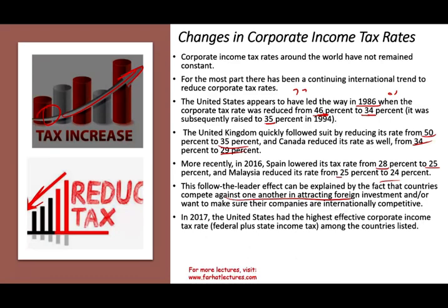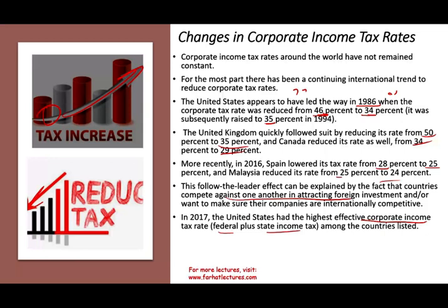In 2017, the US had the highest effective corporate tax rate — federal plus state — among many countries listed. But from my own experience working at a CPA firm, most companies either incurred a loss or broke even for tax purposes, because there were so many credits, loopholes, and legal expenses to structure their business to pay the least amount of taxes. So although it may appear expensive at 39–40%, if you plan properly, you can always minimize your taxes. That 39% was never really the effective rate most companies paid.